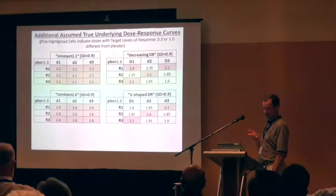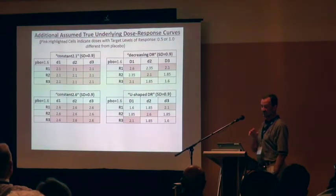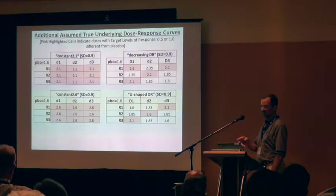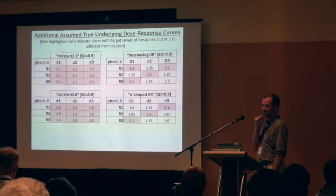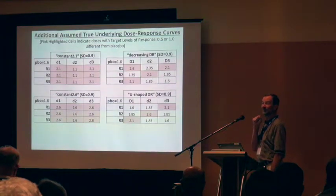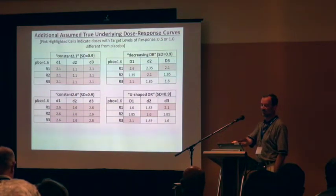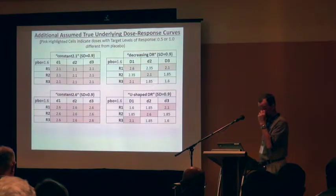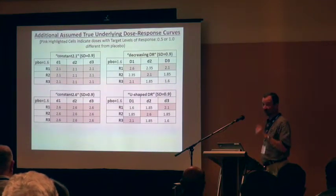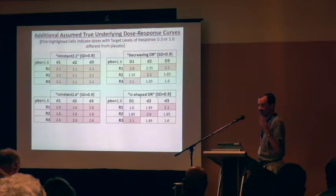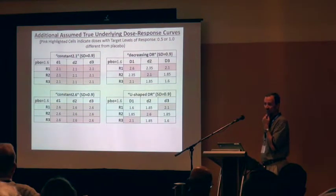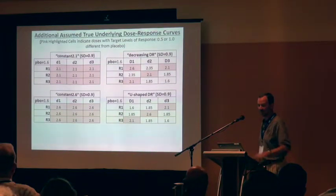Additional scenarios included a constant response of 2.1 regardless of combination, similarly for 2.6. The client also asked to look at what would happen if the response was non-decreasing, so we constructed a reverse dose-response curve just to see what would happen. They didn't believe that underlying scenario was real — they believed strongly in the isotonic assumption — but they asked the question so we did the simulation. There was also a U-shaped example.